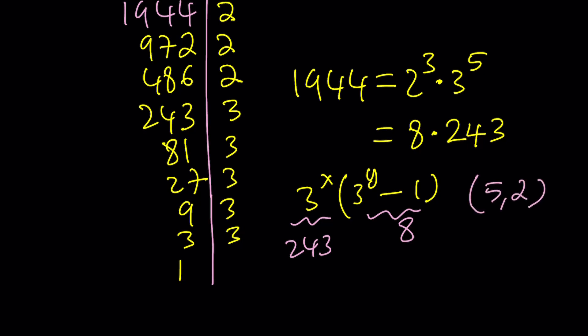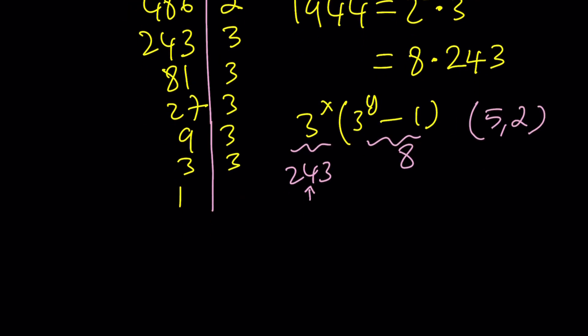Let's check it out. Instead of using the 243 and the 8, I could just borrow one of the 3s from here and give it to 8. In other words, I could use 81 times 24. 81 works for 3 to the power x, but 24 is not 1 less than a power of 3. So, you see, you kind of have to use a little bit of modular arithmetic.